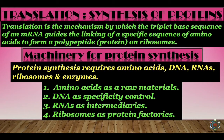DNA serves as specificity control. A cell, in order to maintain its own special characteristics, must manufacture proteins exactly similar to those already present in it. Thus, protein synthesis requires specificity control to provide instructions about the exact sequence of amino acids to get the desired polypeptide. RNA serves as intermediaries between DNA and proteins. Ribosomes are ribonucleoprotein particles that serve as the site for protein synthesis — hence they are called protein factories.